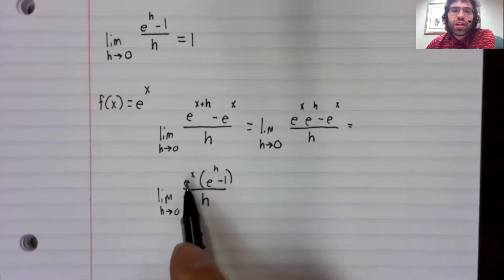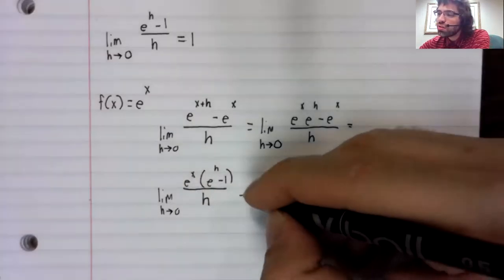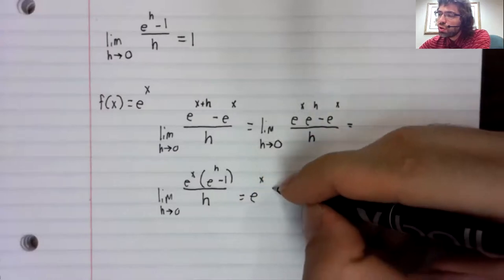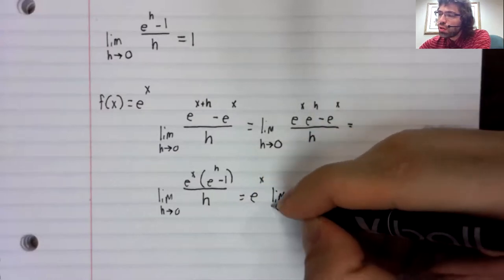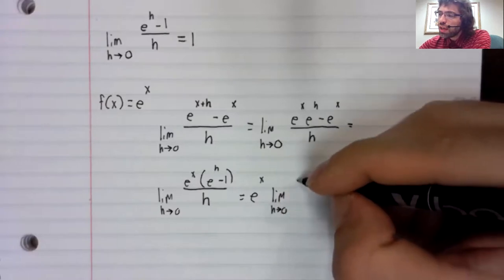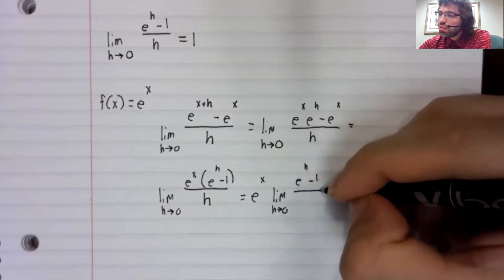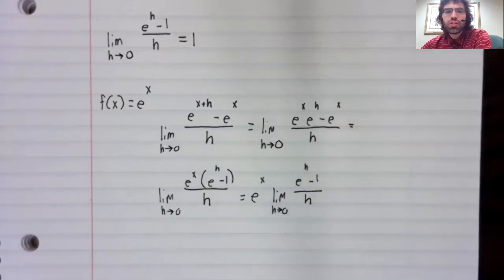e to the x isn't changing. There aren't any h's in e to the x. So we'll pull e to the x out of the limit.